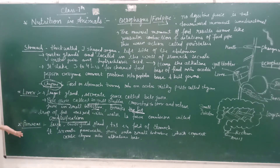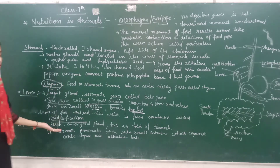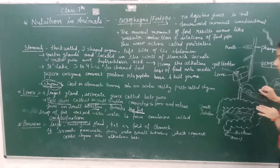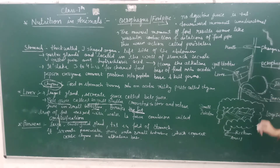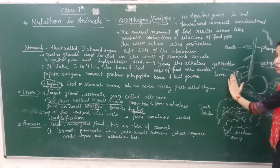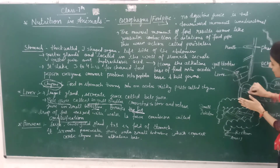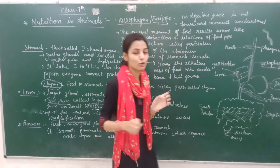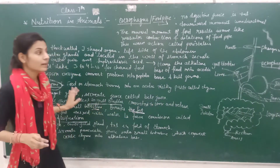Next, we have our pancreas. The pancreas is a large, elongated gland. The pancreas secretes pancreatic juice. It converts the acidic chyme to an alkaline medium. The pancreas and liver work together in the digestion process.